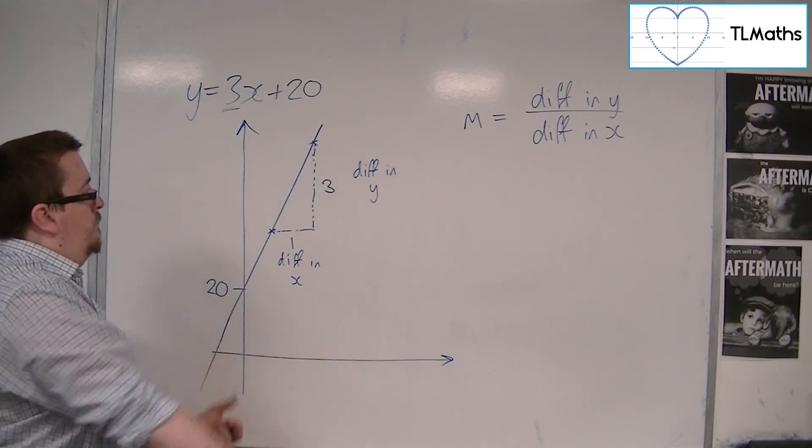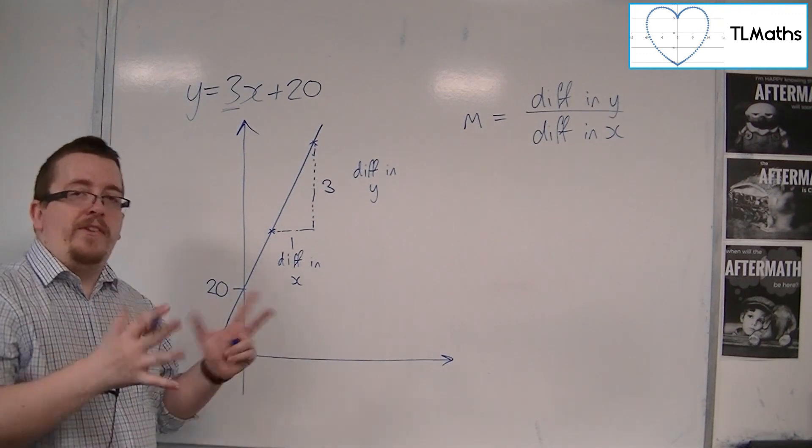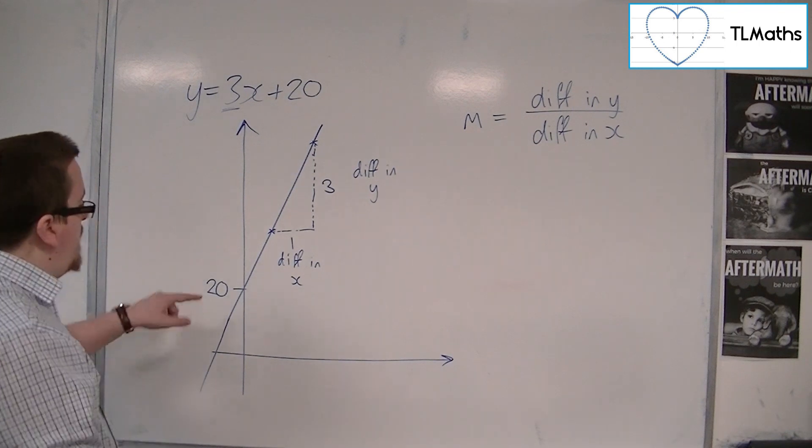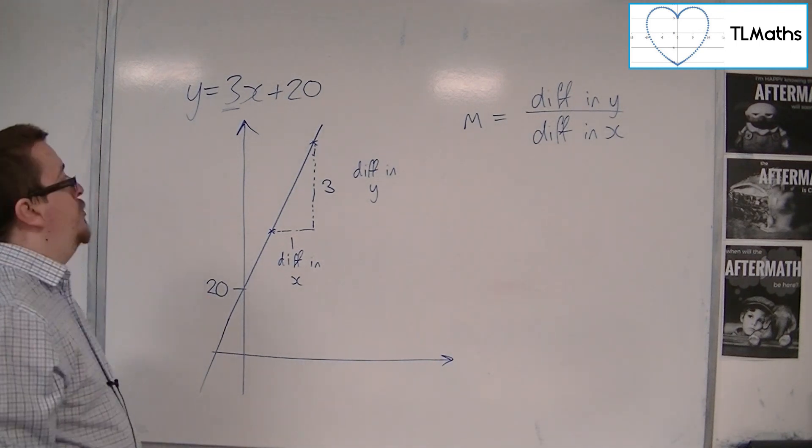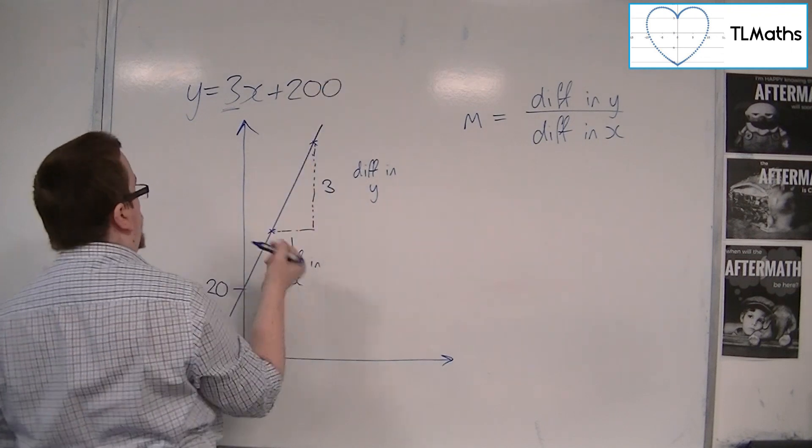The gradient of the line remains exactly as it is. It doesn't matter where it's crossing the y-axis, it is unchanged. So if I change this to 200.